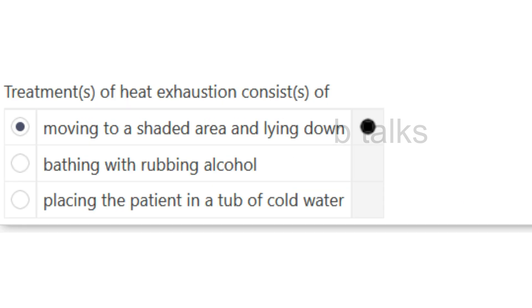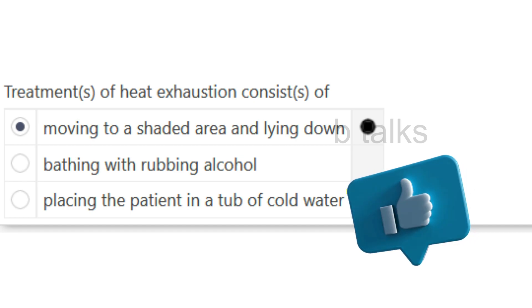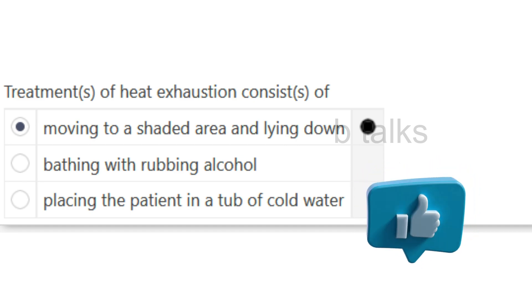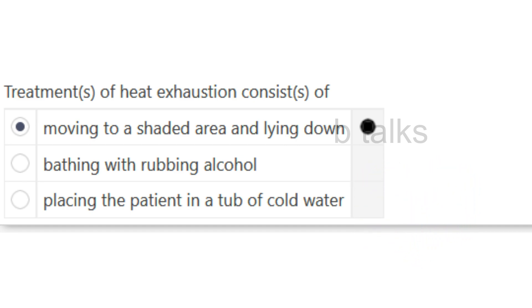Treatment of heat exhaustion consists of: Moving to a shaded area and lying down; Bathing with rubbing alcohol; Placing the patient in a tub of cold water. Answer: Moving to a shaded area and lying down.